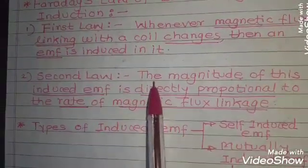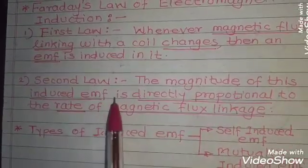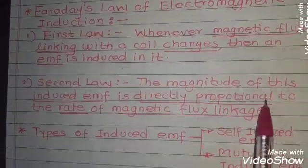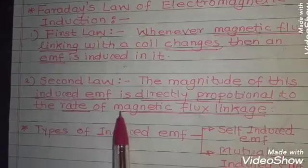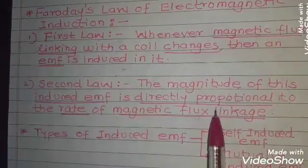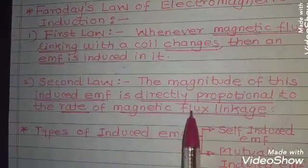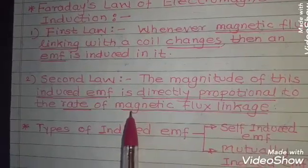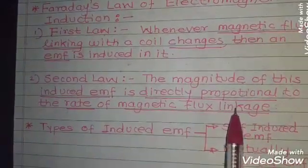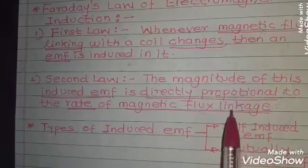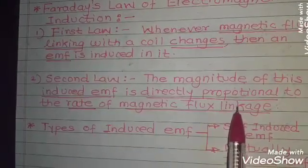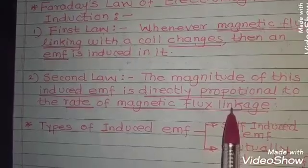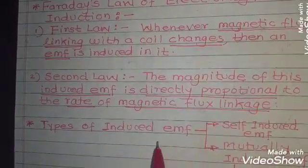That means at how much fast the magnetic flux linkage with a coil occurs, the induced EMF will increase or decrease according to it. Now, there are two types of induced EMFs according to Faraday's law of Electromagnetic Induction.